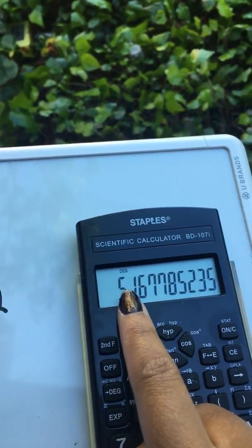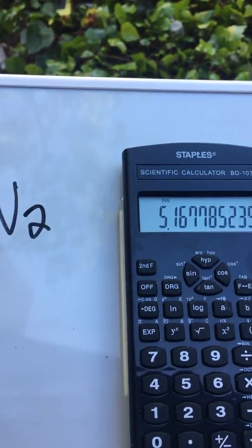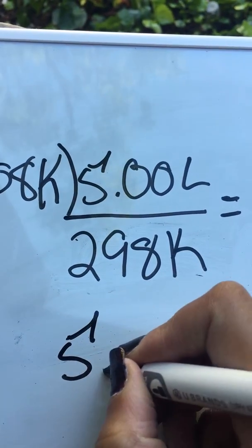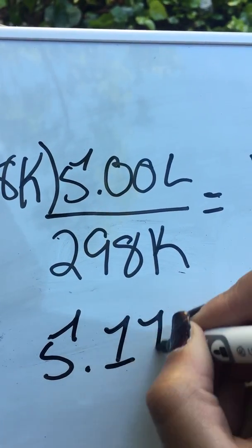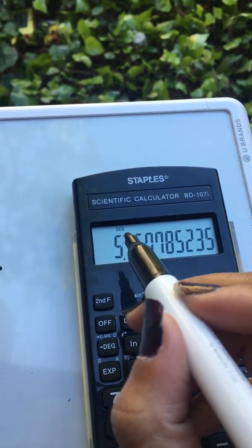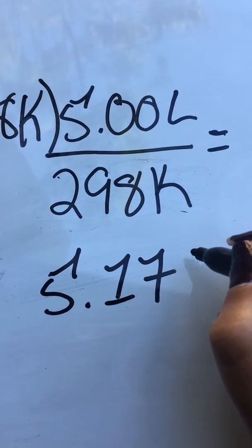So really what you should be having is 5.17 because you rounded that 6 up because of the 7 right here, and this is your answer.